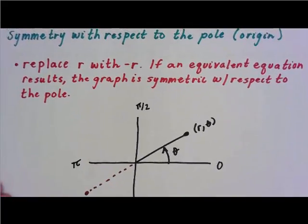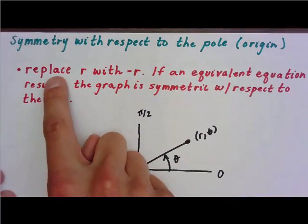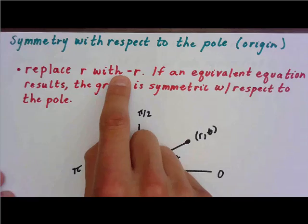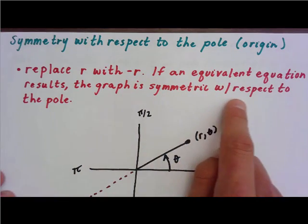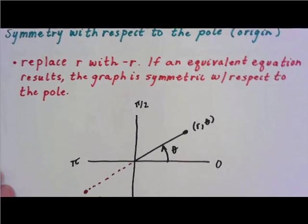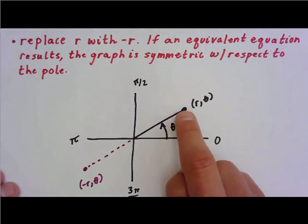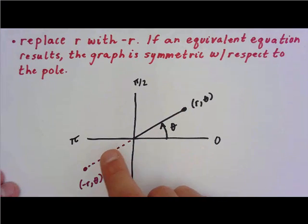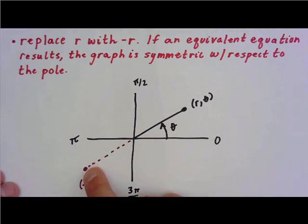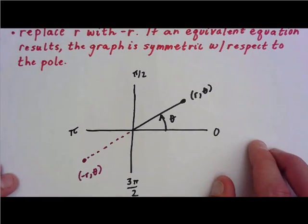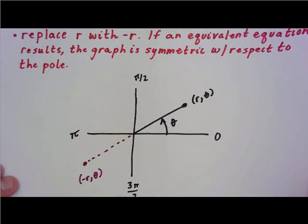The third type is pole symmetry, or symmetry about the origin. Here you only replace r with negative r. If an equivalent equation results, the graph is symmetric with respect to the pole. Remember that negative r means the same angle but going back the opposite direction.